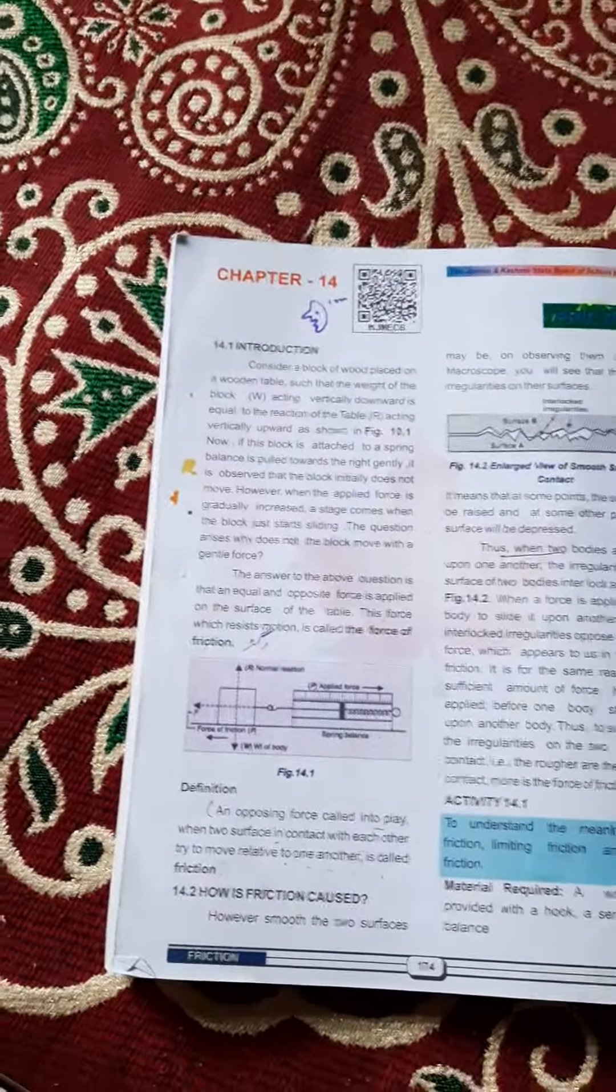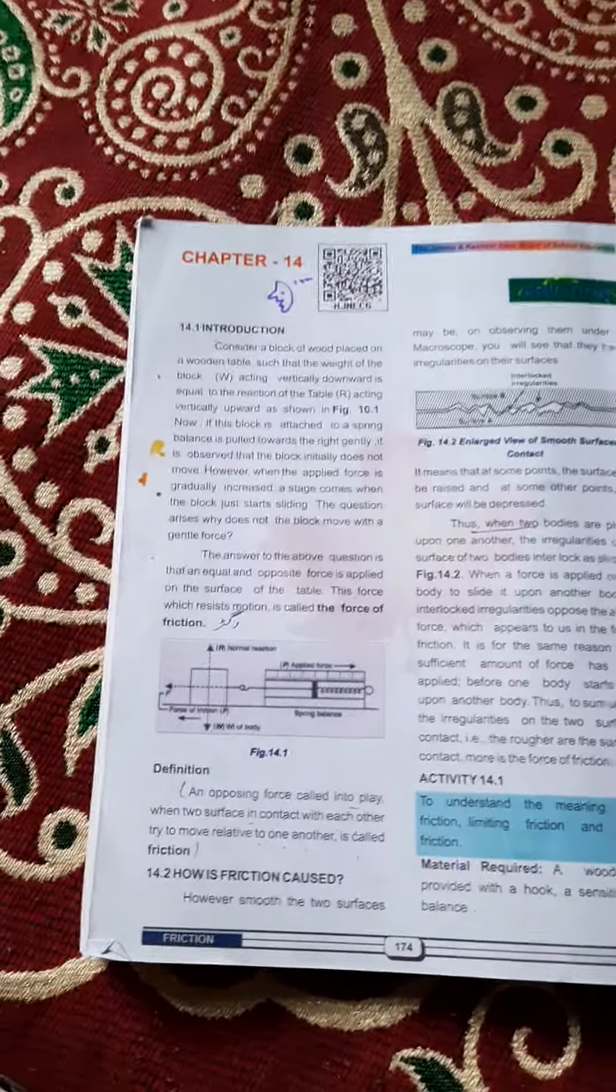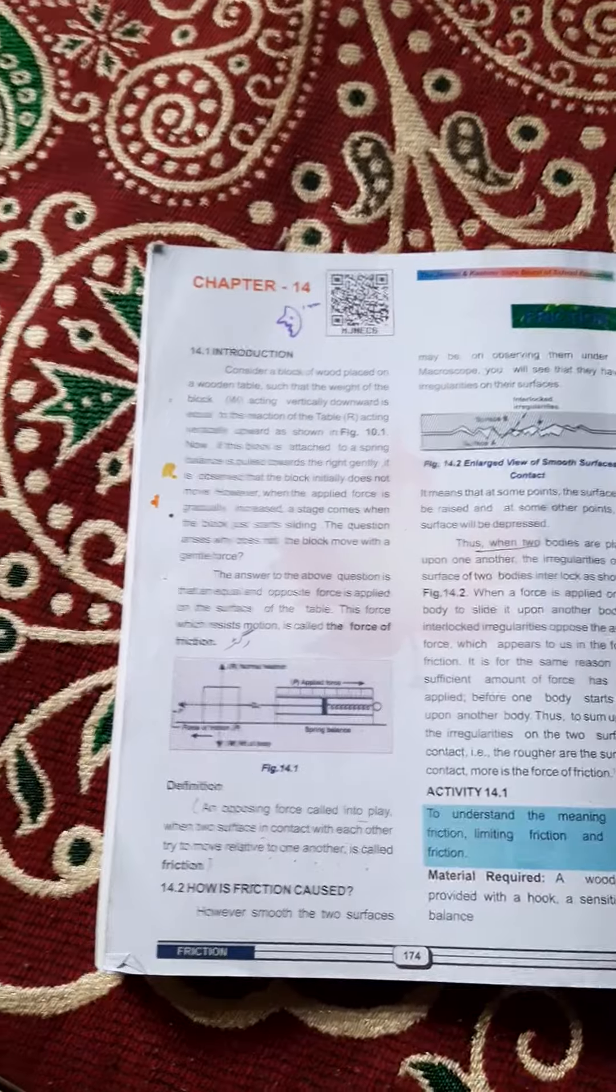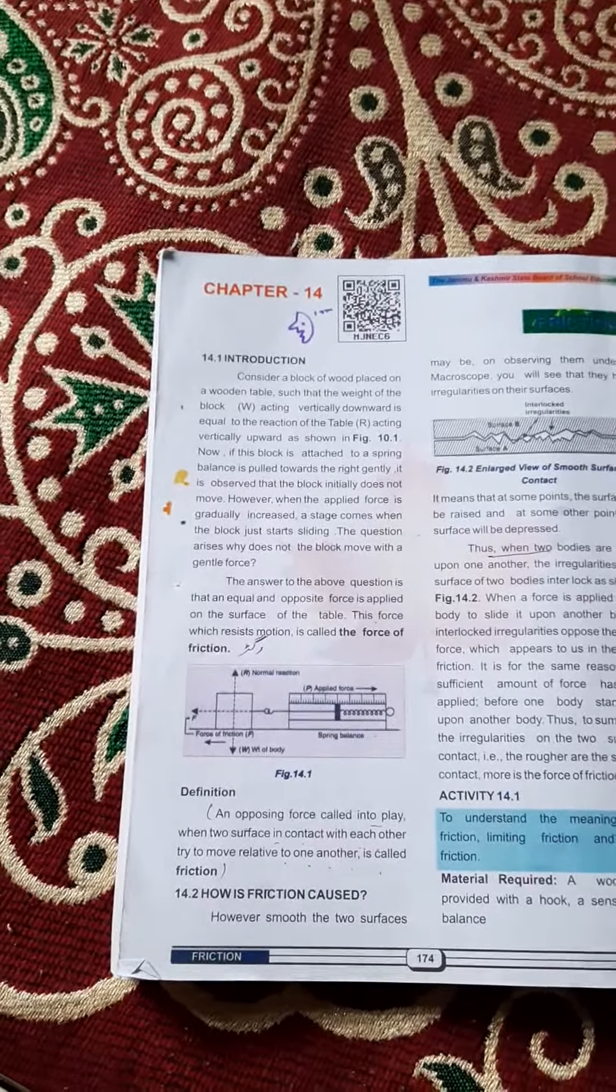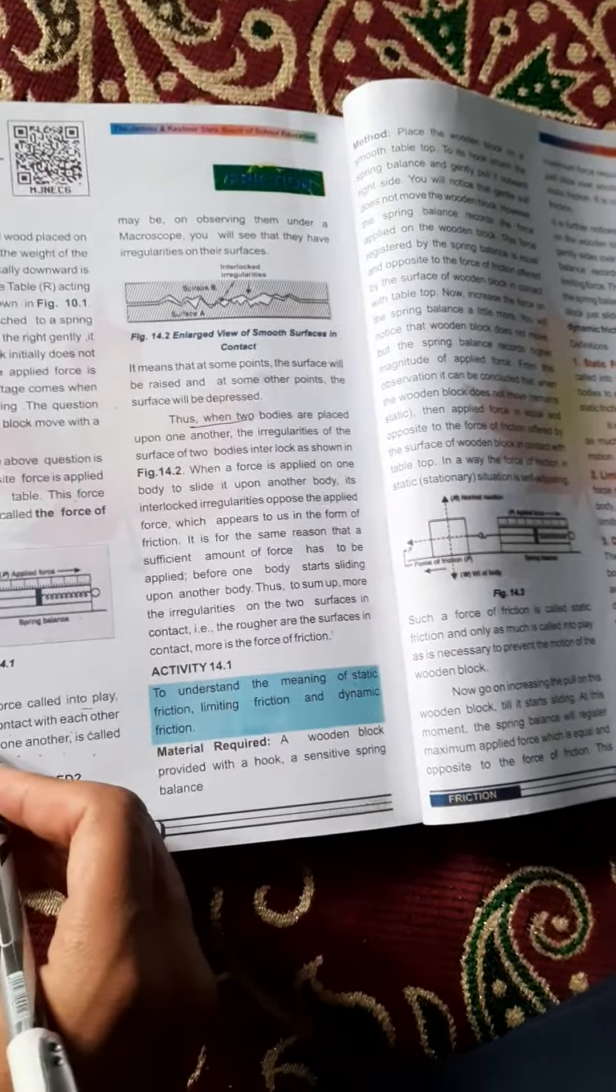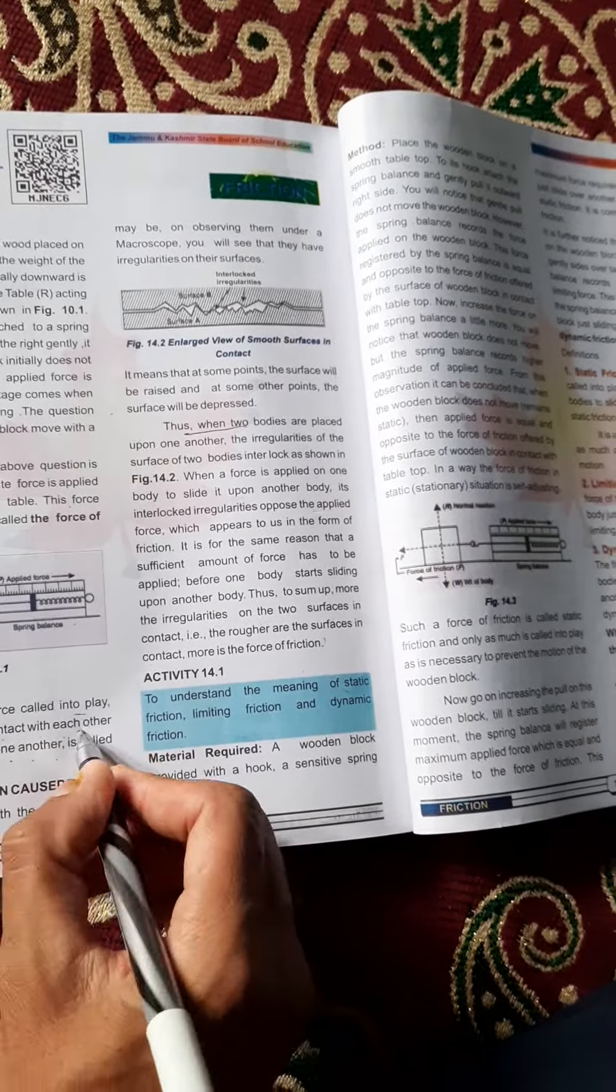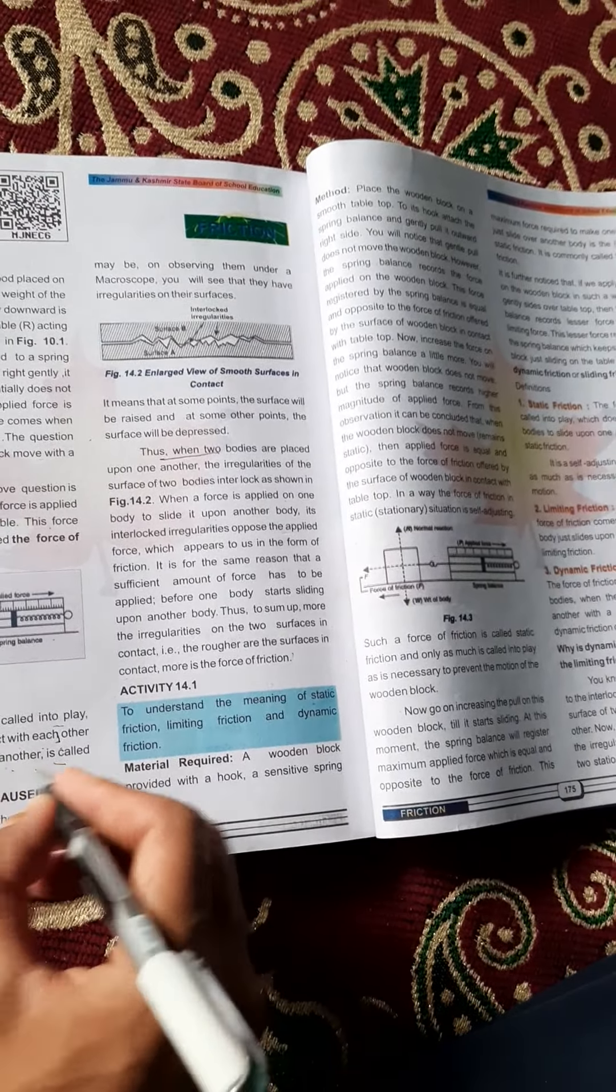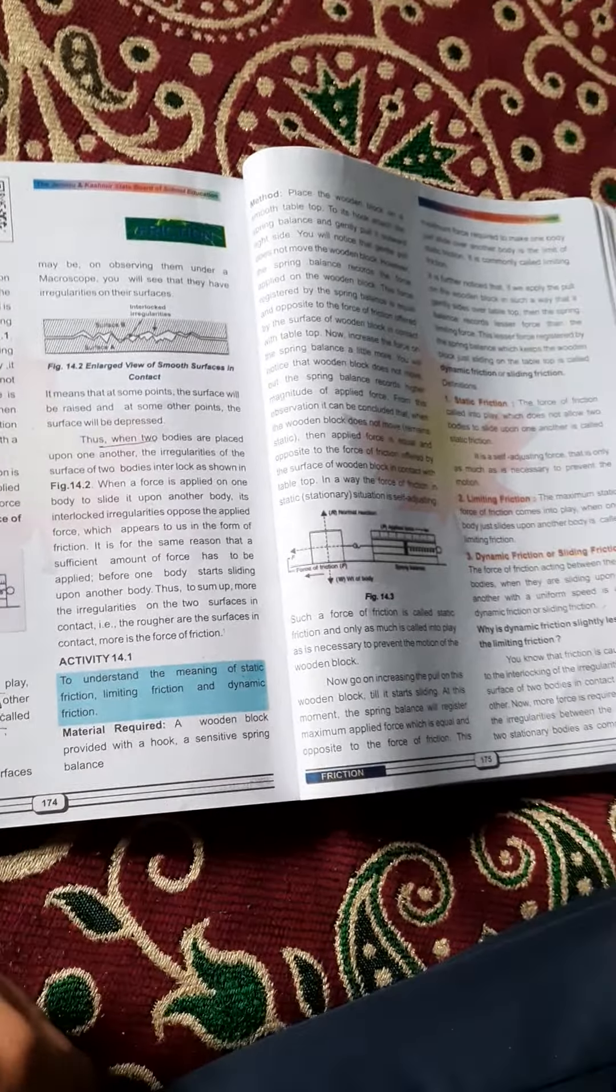یہ وہ عمل ہے جس میں کسی چیز کا دوسرے چیز سے contact ہو کے قسم کا force پیدا ہوتا ہے جس کو ہم Friction یا رگڑ کہتے ہیں. When an opposing force called into play when two surfaces in contact with each other try to move related to one another is called Friction. تو Friction پیدا کس طرح ہوتی ہے.